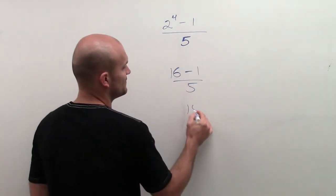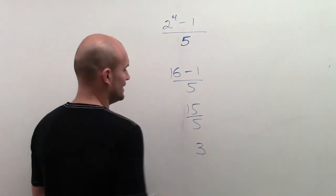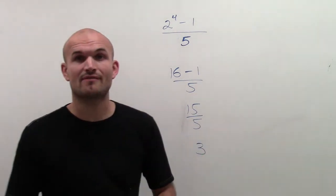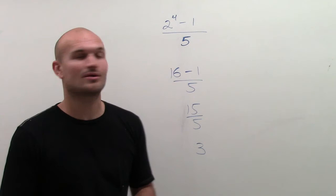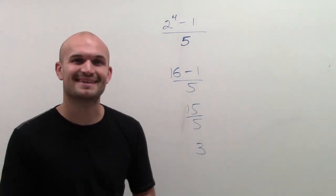16 minus 1 is 15, divided by 5 equals 3. So that's how we simplify that expression. Thanks.